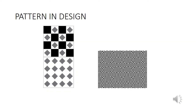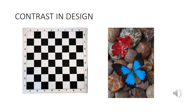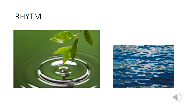This is an example of how pattern is made in design using contrast and geometry. This composition is an example of emphasis in design. The chessboard is a good example of contrasting squares placed together to form a composition. The butterfly on the right side is a good example for contrast.